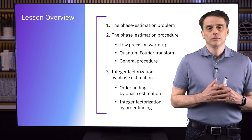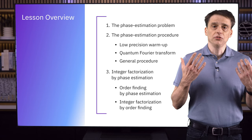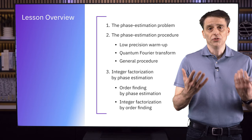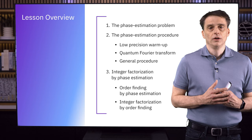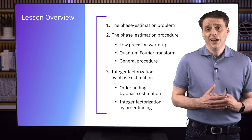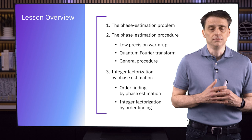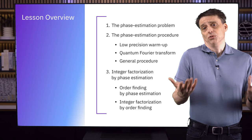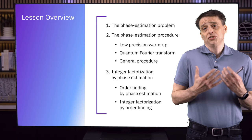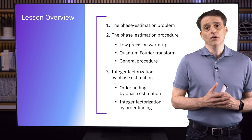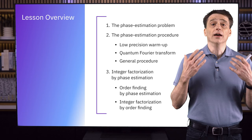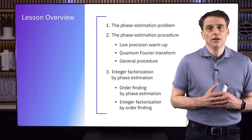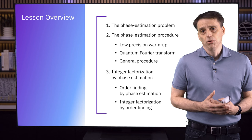Here's an overview of the lesson. We'll start with a definition of the phase estimation problem itself, and then discuss a method for solving it with a quantum computer. We'll take it one step at a time, beginning with a warm-up. In the phase estimation problem, the goal is to approximate a certain real number, and in this warm-up part, we'll see how we can get a very low precision approximation. This isn't going to be good enough for factoring — we'll actually need a pretty high precision approximation — but it's useful to begin with this warm-up just to get a sense for how the whole thing works.